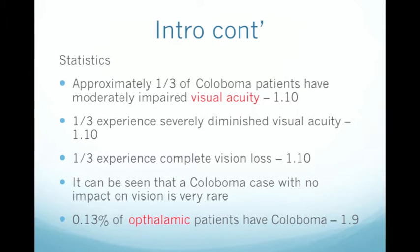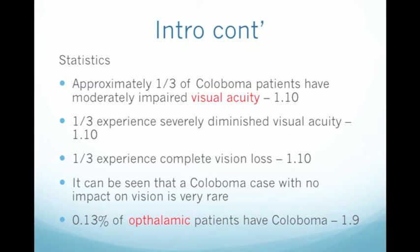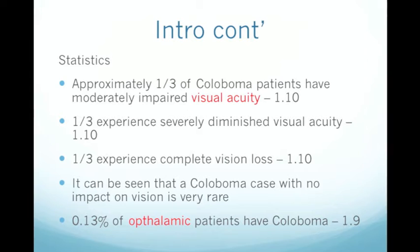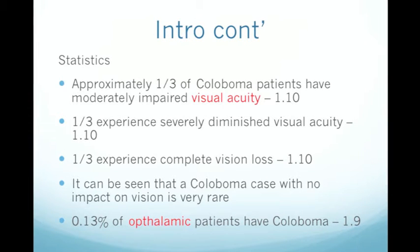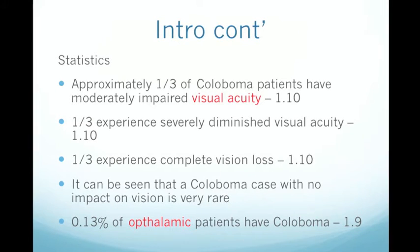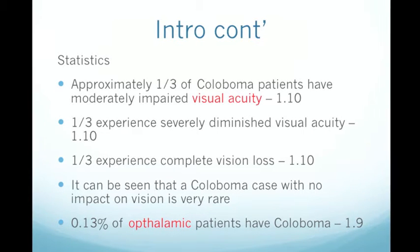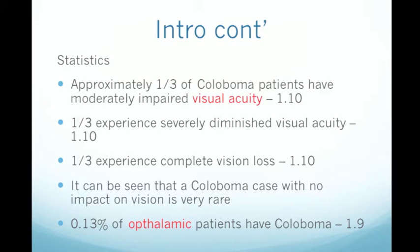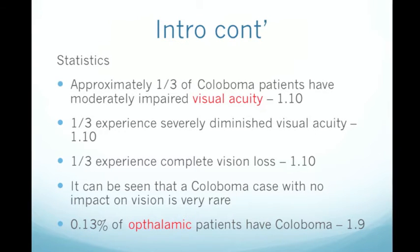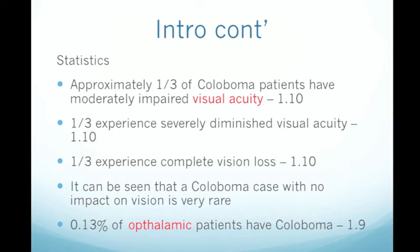Let's look at some statistics before starting normal development. One third of coloboma patients have moderately impaired vision, one third have severely impaired vision, and one third experience complete vision loss. Approximately 99% of coloboma patients have at least some degree of vision loss due to retinal coloboma. 0.13% of ophthalmic patients — meaning eye patients — have coloboma, making it relatively rare as far as eye conditions are concerned.